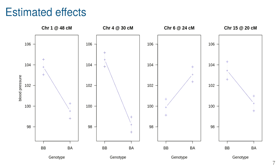The major loci are on chromosomes one and four. Going from the homozygous B genotype to the heterozygous genotype gives a drop in blood pressure of about four units on chromosome one and about six or seven units on chromosome four. The chromosome six and fifteen loci, which are not showing significant effects, have estimated effects about half as large — roughly three units of blood pressure each.